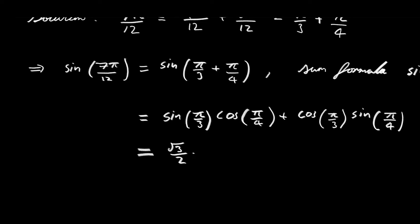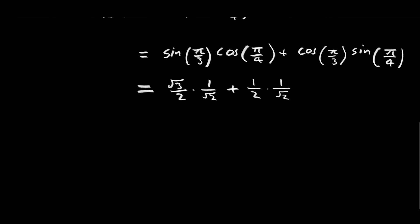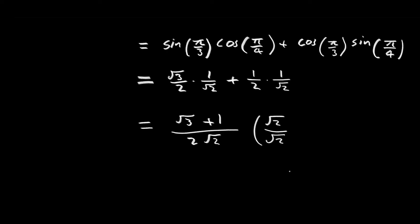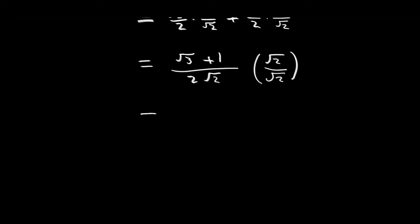So we have the square root of 3 over 2 times 1 over the square root of 2, plus the cosine of π over 3, which is 1 half, times the sine of π over 4, which is 1 over the square root of 2. We already have a common denominator of 2 times the square root of 2. So when we simplify the numerator, we have the square root of 3 plus 1 over a common denominator of 2 times the square root of 2. If you want, you can rationalize the denominator by multiplying by the square root of 2 over the square root of 2, and we end up with the square root of 6 plus the square root of 2 divided by 4.